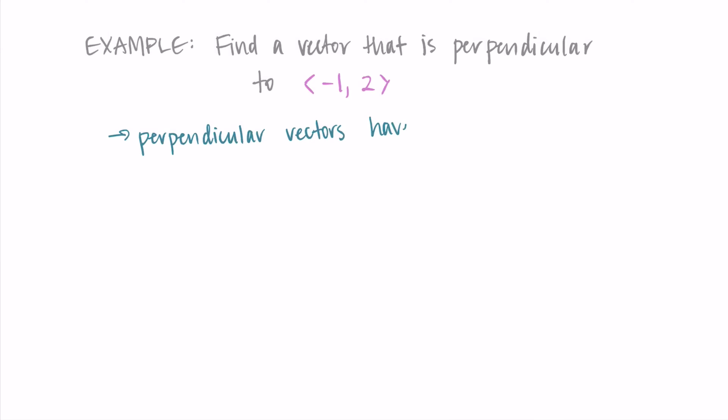So the important thing to remember here is that perpendicular or orthogonal vectors have a dot product of 0. And this is because if they are perpendicular or orthogonal, they have an angle of pi over 2. So cosine of pi over 2, which would be cosine of 90, would be equal to 0.